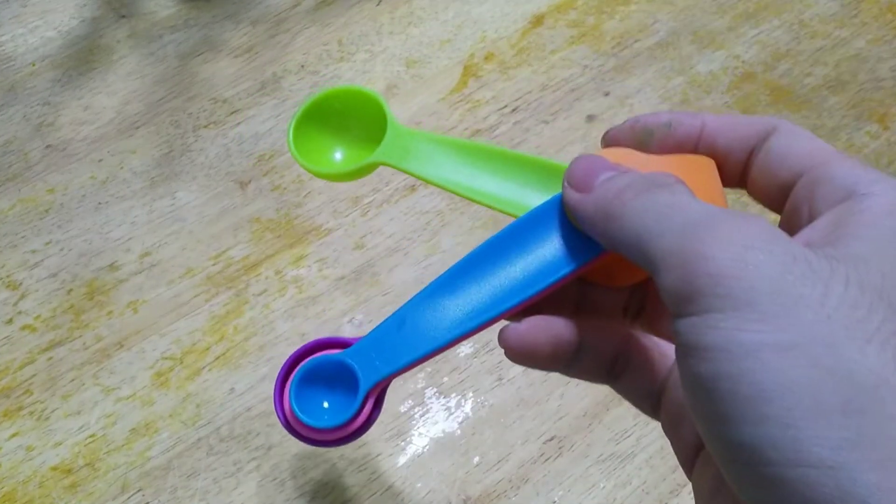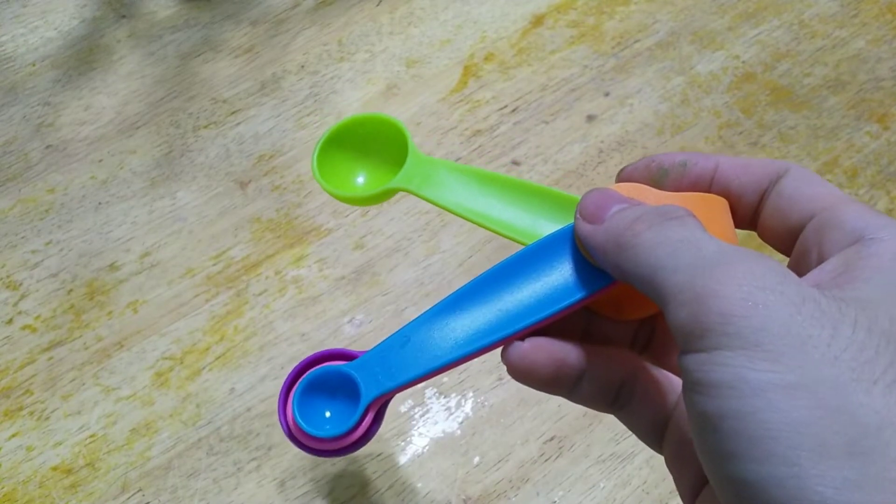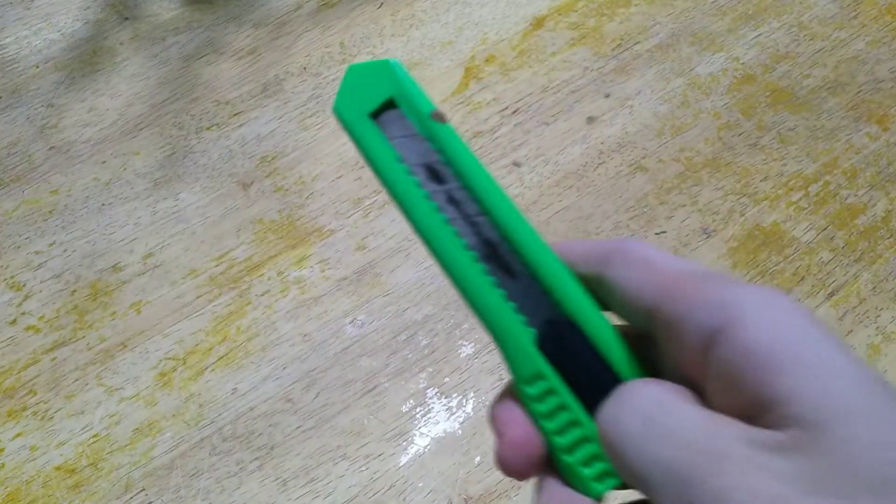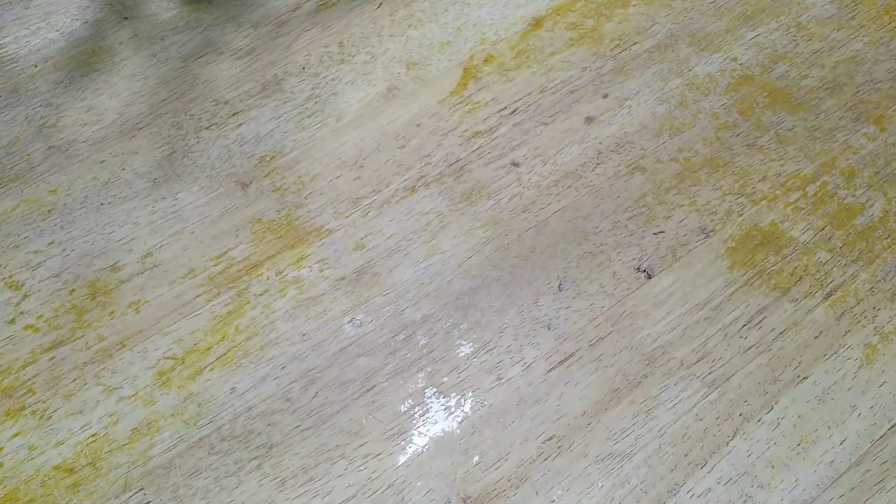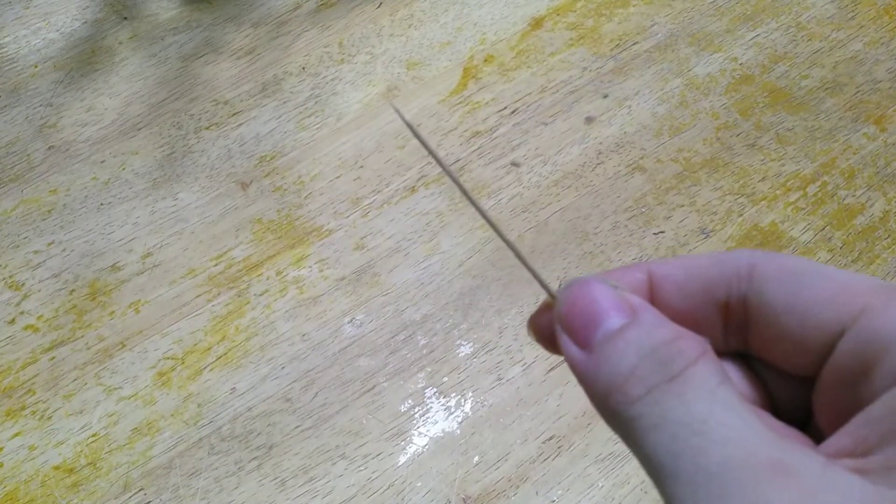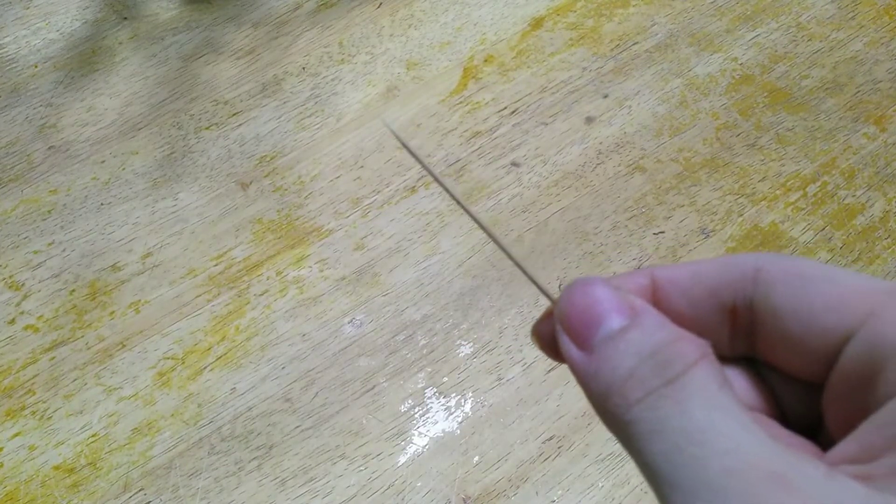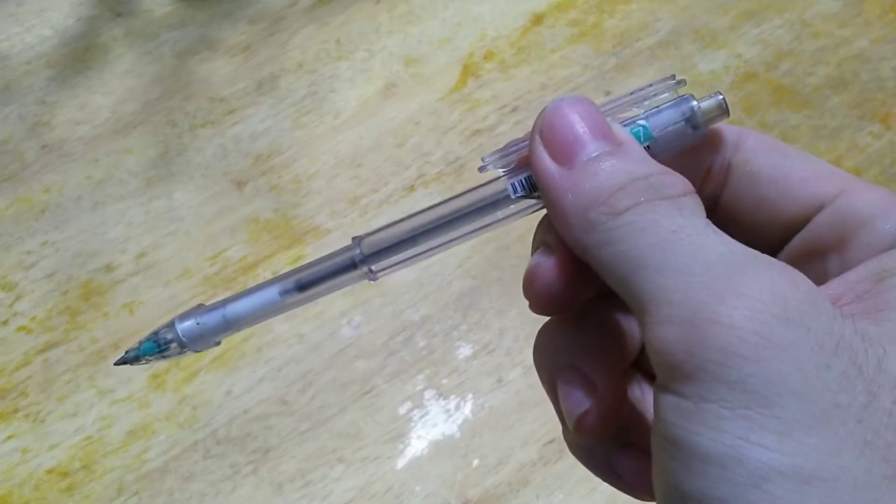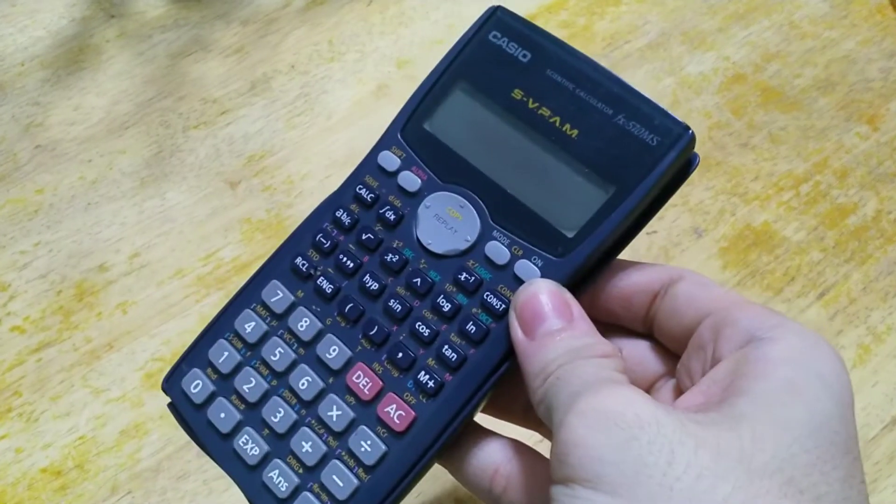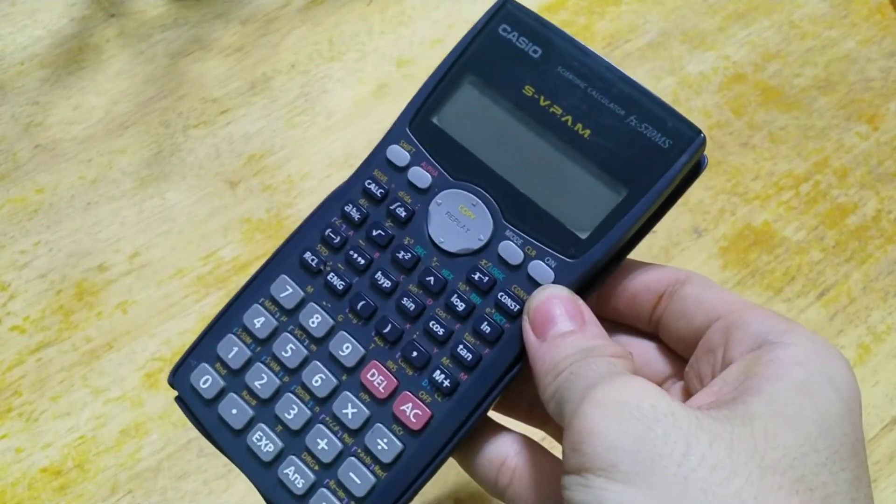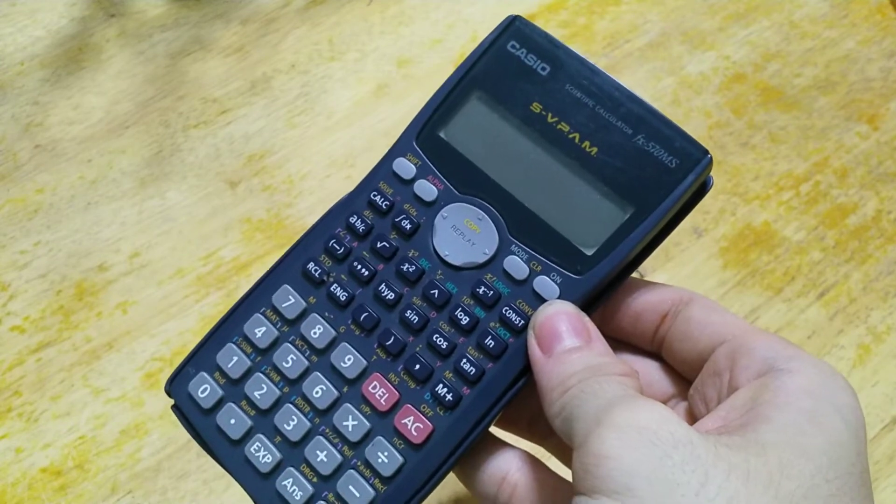Next, measuring spoon. Later I will use the measuring spoon to measure the vinegar. A sharp knife. A toothpick to transfer the food coloring to the TLC plate which is the drawing paper. A mechanical pencil as a marker. A very accurate scientific calculator. Later I will use it to calculate the RF value.